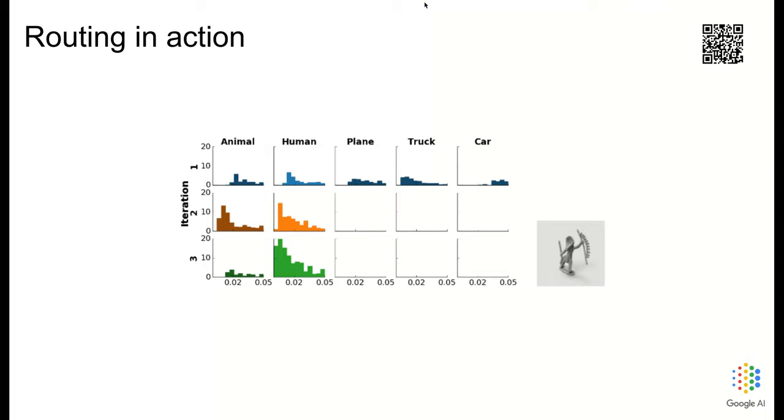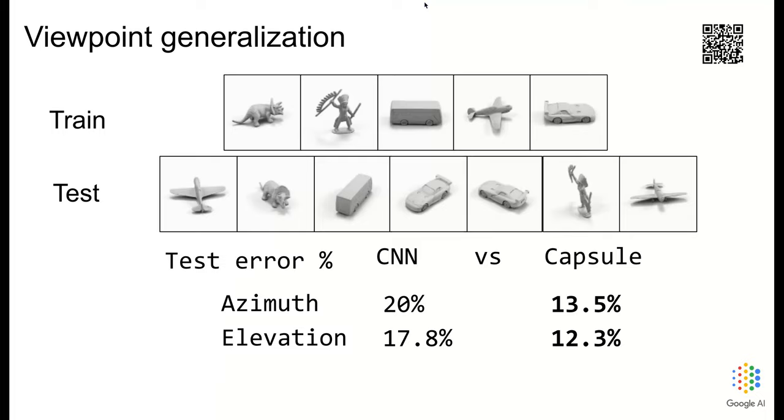Remember that this is a non-linearity happening at inference and training between each two capsule layers. This shows another example for a human image. Interestingly, after the first step, animal and human get boosted. This indicates that their part-whole relationships are similar, which makes sense. We also tested capsule networks on their ability to generalize to new viewpoints. We trained on only one-third of available viewpoints in the NORB dataset. At test time, we ask it to extrapolate to new viewpoints. We compare capsule network results with a baseline CNN. Capsules have significantly lower test error in this task.